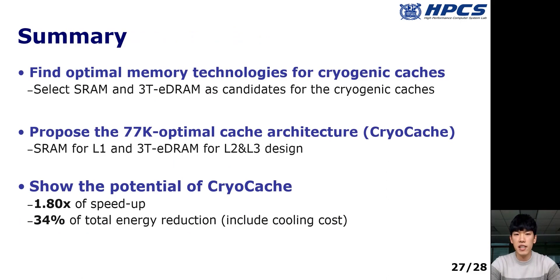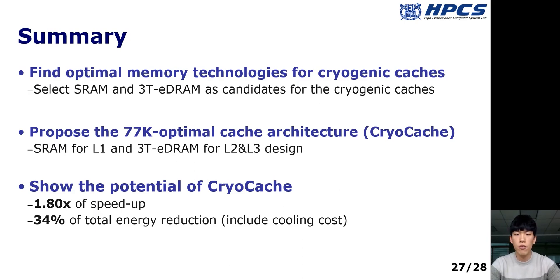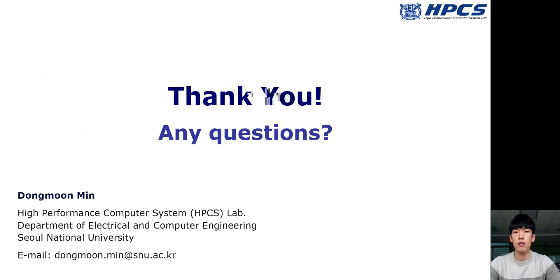This is the last slide of my presentation. In summary: first, we find optimal memories for cryogenic caches, selecting SRAM and 3T-DRAM. Second, we propose the cryogenic-optimal cache architecture CryoCache, which consists of SRAM-based L1 design and 3T-DRAM-based L2 and L3 design. Finally, CryoCache improves performance by 80% on average, up to 4 times on streamcluster, and reduces total energy consumption by 34%, even including the cooling cost. Thank you for listening, and I am happy to answer your questions.